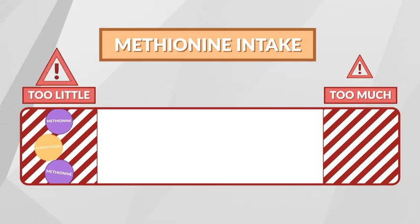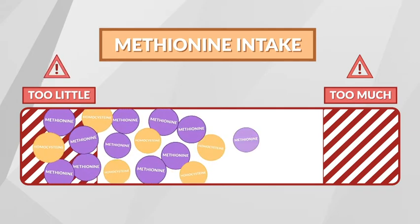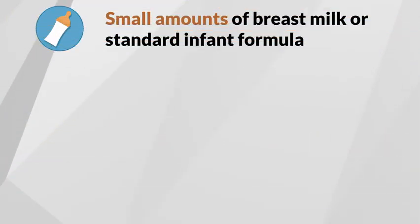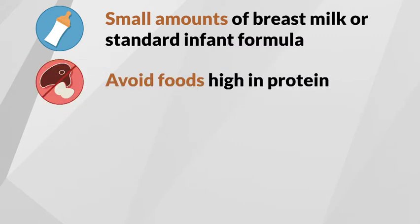Even though methionine is dangerous for someone with HCU, it is essential for normal development. A limited and controlled amount must be taken daily. This means that your baby can only have a small amount of breast milk or standard infant formula. As your child gets older and starts eating regular food, foods that are high in protein must be avoided, since all protein contains methionine.